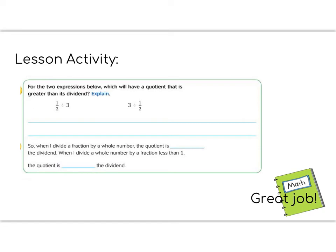Time for the lesson activity. The lesson activity is the try this section at the bottom of your page. It says, for the two expressions below, which one will have a quotient that is greater than its dividend? Remember, the dividend is the one that goes inside the house. So for example, if I had one-half divided by three,